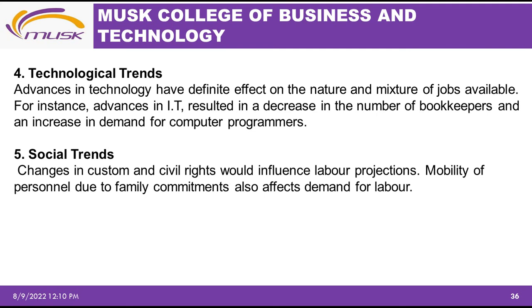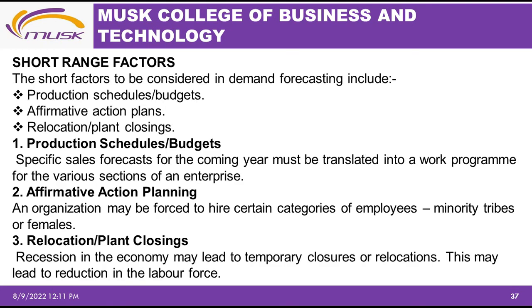Lastly among long-range factors, social trends — changes in customs and civil rights — influence labor projections. Mobility of personnel due to family commitments also affects demand for labor. Turning to short-range factors, those to be considered in demand forecasting include production schedules and budgets, affirmative action plans, and relocation or plant closings. Regarding production: specific sales forecasts for the coming year must be translated into a work program for various sections of an enterprise.